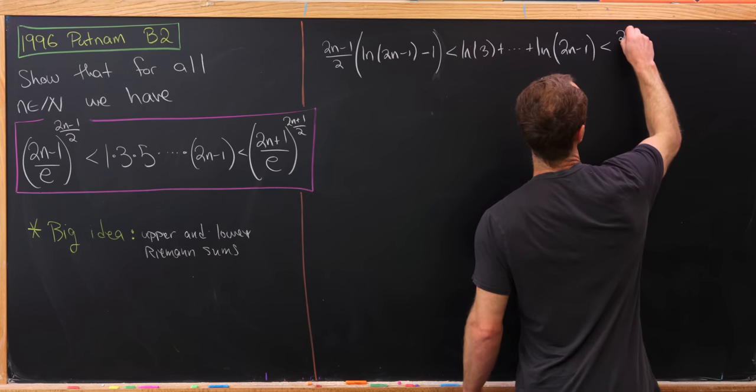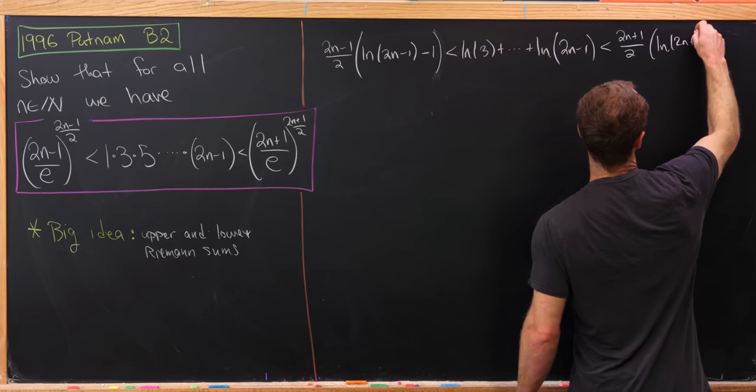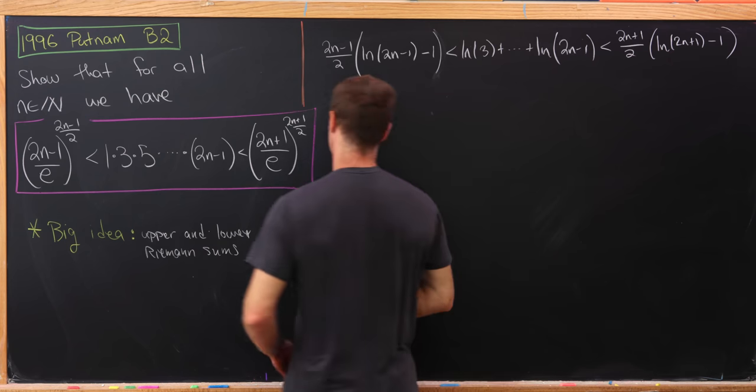Well, we'll have 2n plus 1 over 2 times the natural log of 2n plus 1 minus the natural log of e, which, again, is 1.